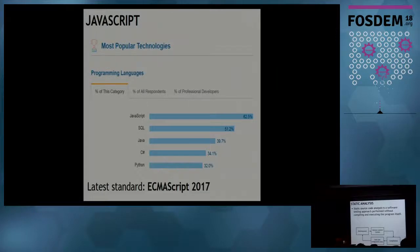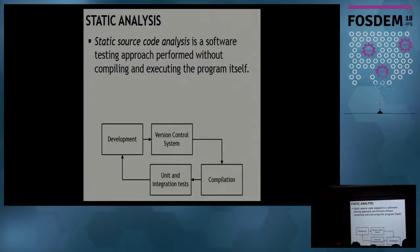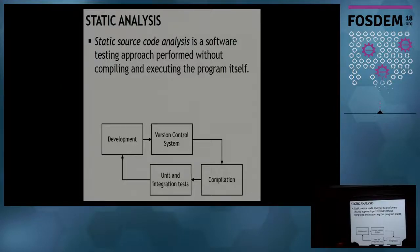One of the techniques to guarantee good source code is called static analysis — the full name is static source code analysis — which means that we test software without compiling and executing it. We take the source code, do some analytics on it, and check for rule violations.